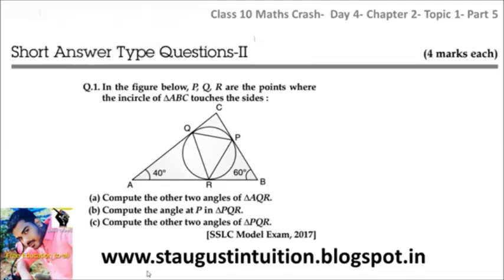In the figure below, PQR are the points where the inner circle of triangle ABC touches the sides. Compute the other two angles of triangle AQR. Compute the angles at P in triangle PQR. Compute the other two angles of triangle PQR.